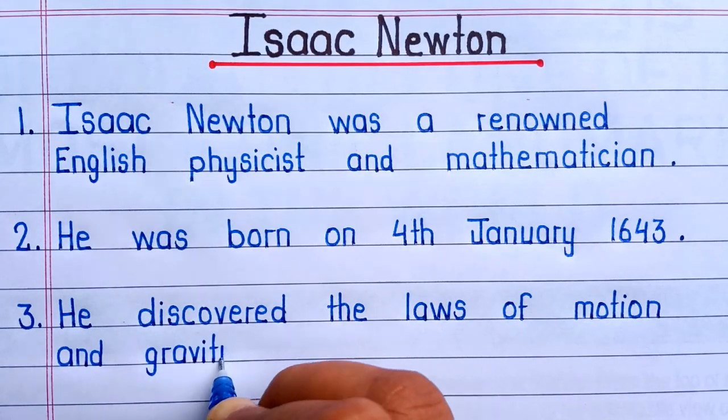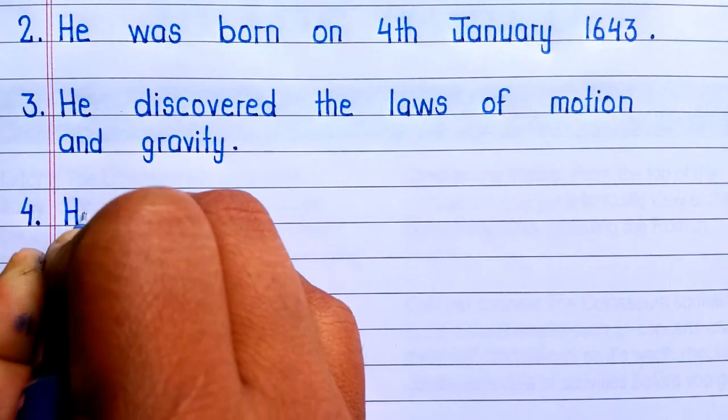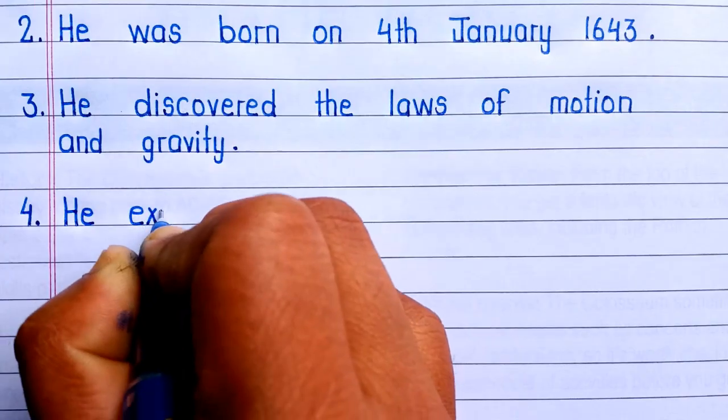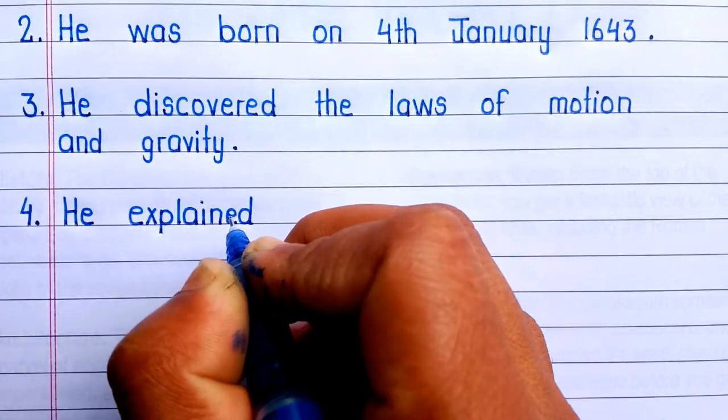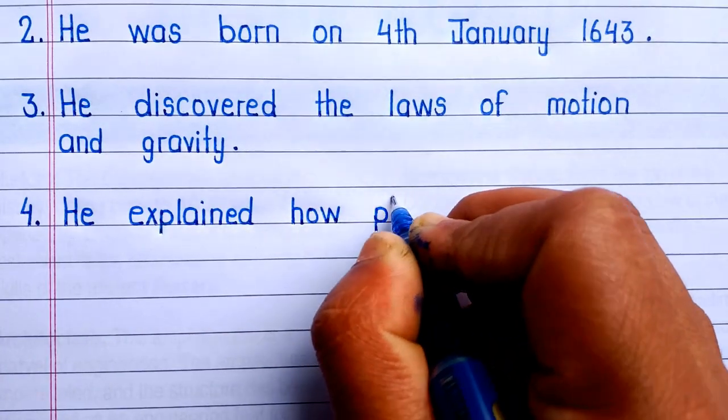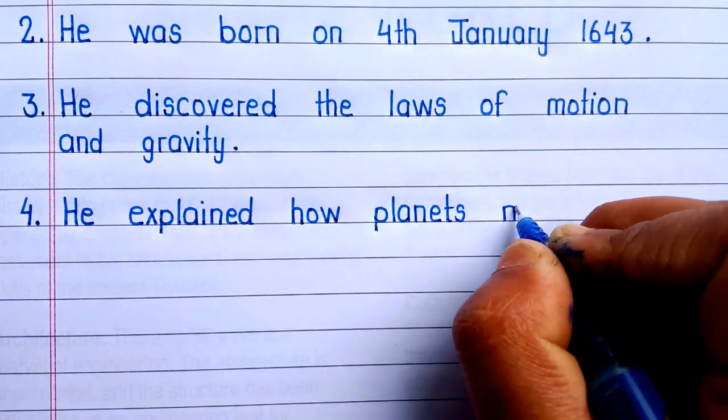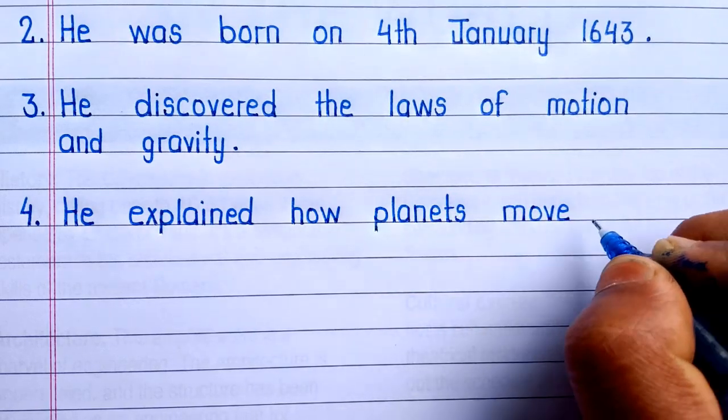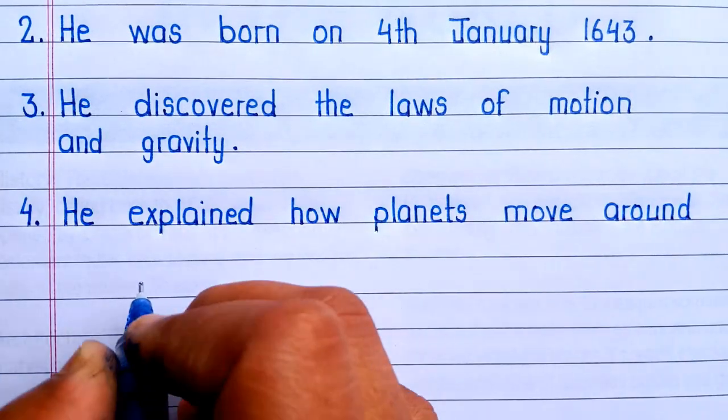Third line is, he discovered the laws of motion and gravity. Fourth line is, he explained how planets move around the sun.